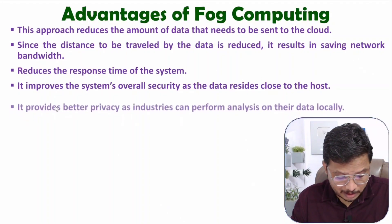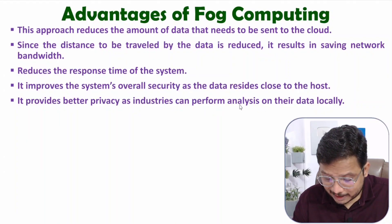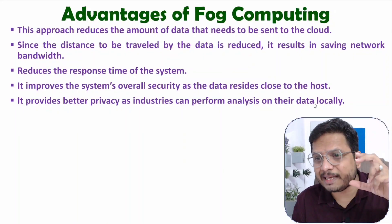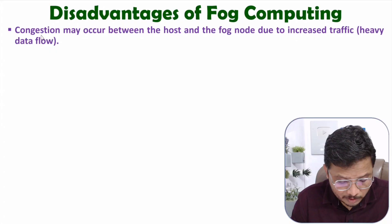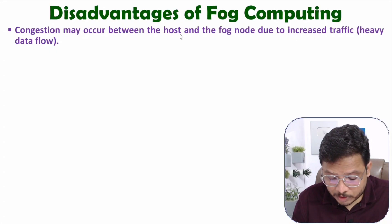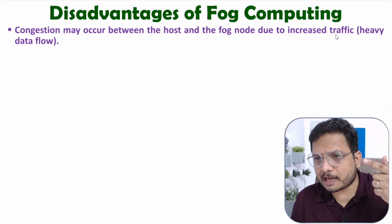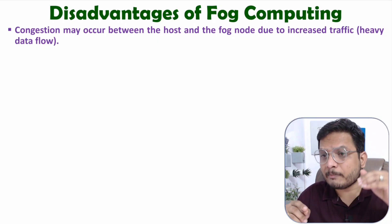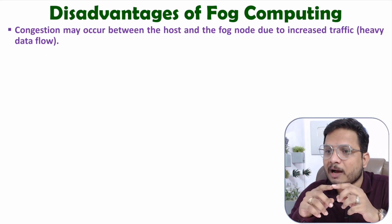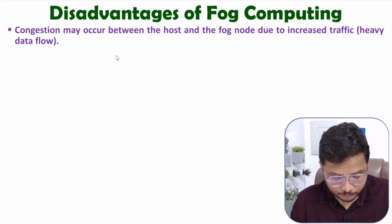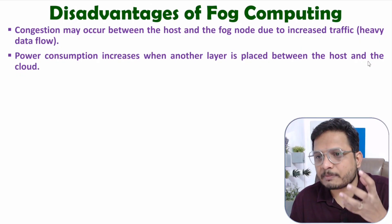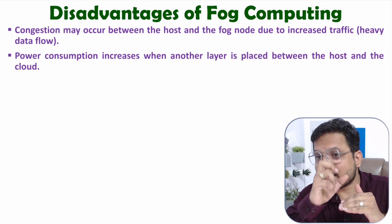Fog computing provides better privacy as industries can perform analysis on their data locally — data access happens locally because the fog cloud is very near to the end device. Regarding disadvantages: congestion may occur between the host and fog node due to increased traffic. If multiple end nodes are at the same location, it is difficult to provide a fog node to all users, and in cases of higher user density there can be congestion. Power consumption also increases when another layer is placed between host and cloud.